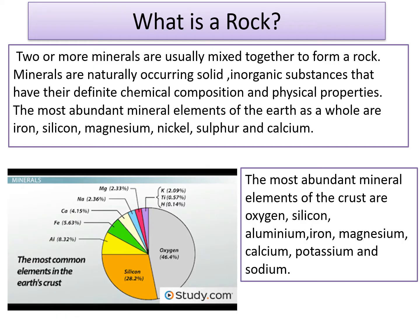Whereas the most abundant mineral elements of the crust are oxygen, silicon, aluminum, iron, magnesium, calcium, potassium and sodium.